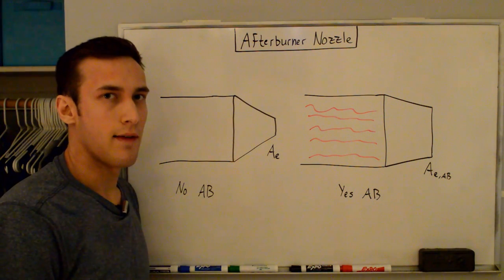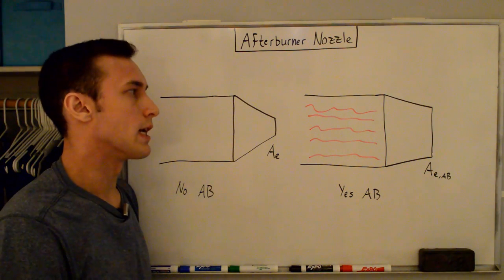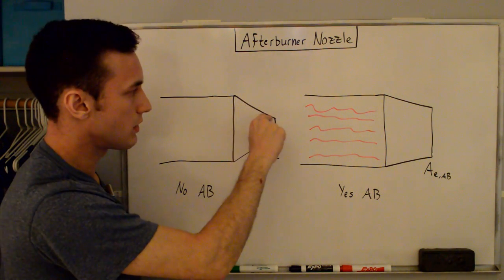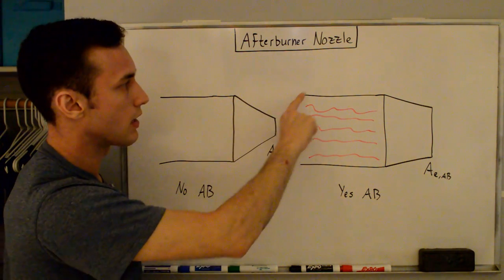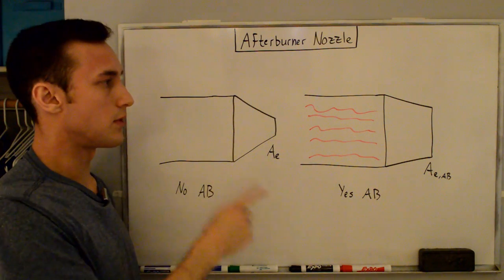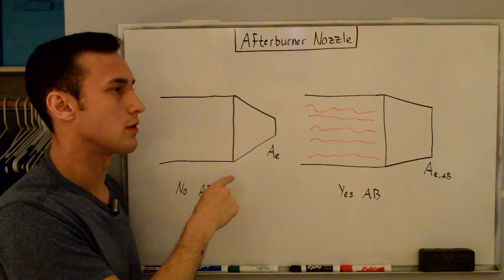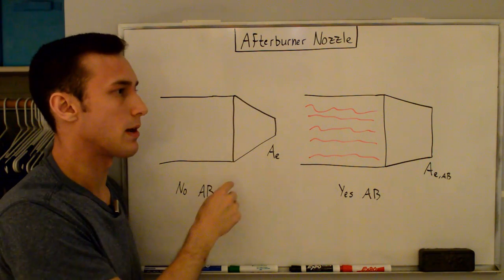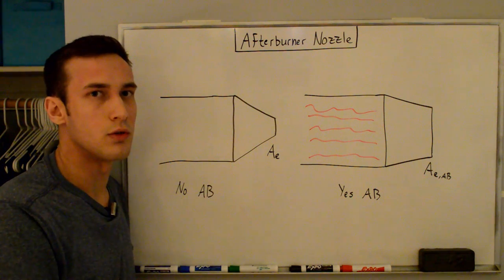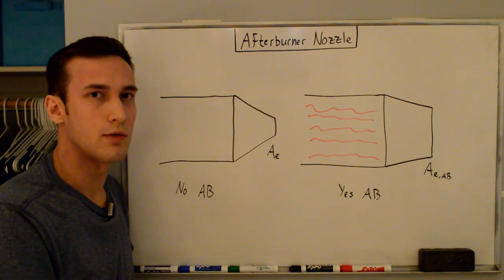Now if you have an afterburner on your jet engine, you most likely have a converging-diverging nozzle — the nozzle decreases to a throat area and then increases again — to get the maximum amount of thrust. But the same physics applies to converging nozzles and they're easier to talk about, so I'm going to go through a converging nozzle example, and you can apply that to a converging-diverging nozzle.